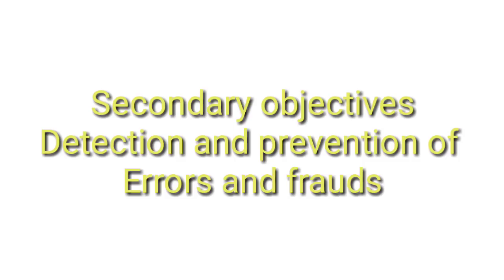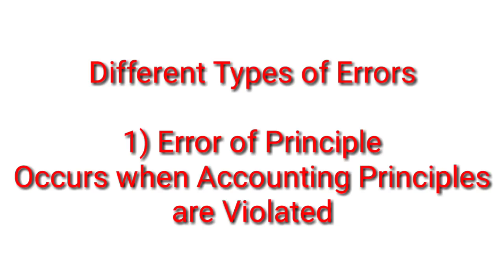Now we are going to discuss different types of errors — an interesting question. There are different types of errors. The first error is the error of principle. Error of principle is a type of error which occurs when an accounting principle is violated — for example, not following debit-credit rules, misclassifying assets and liabilities, prepaid expenses, outstanding expenses, or treating revenue expenses as capital expenditure.